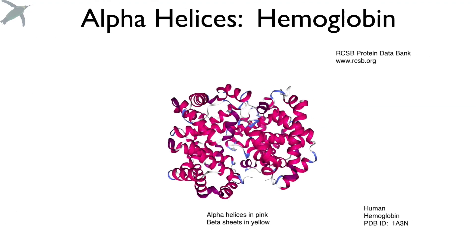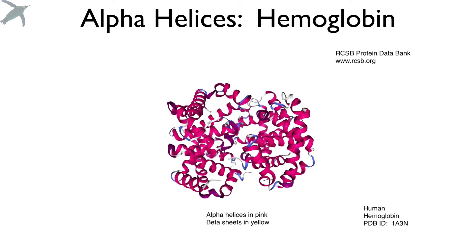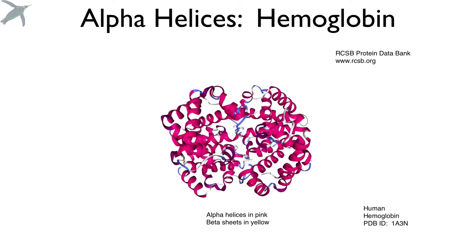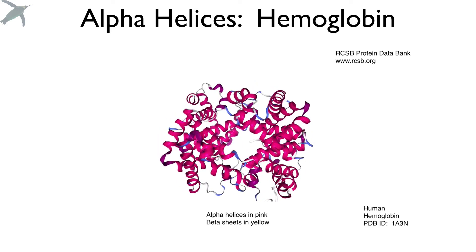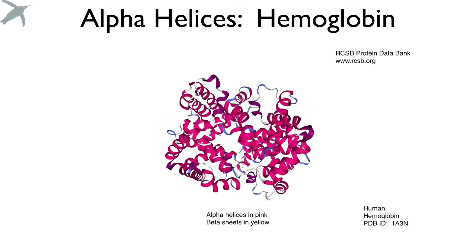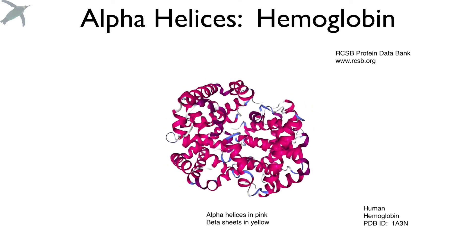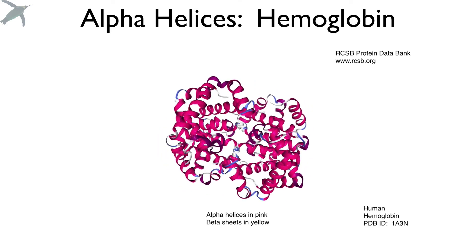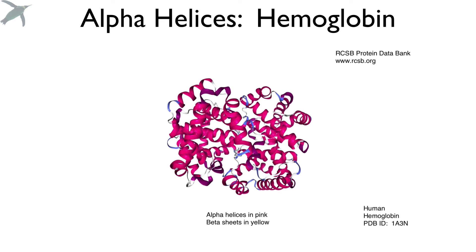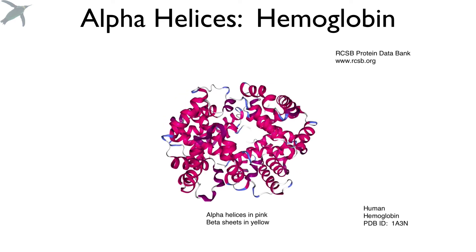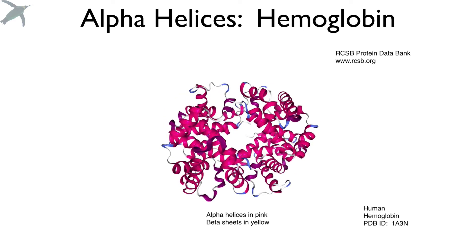Here's another example — hemoglobin. The alpha helices actually keep the shape of this protein. Hemoglobin binds up to four molecules of oxygen gas, and it is mainly alpha helices that hold the thing together.